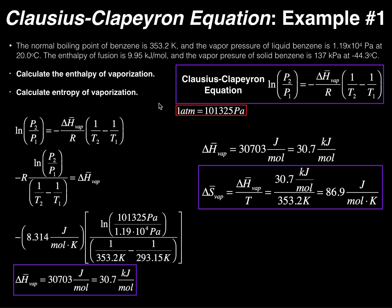Typical problems using the Clausius-Clapeyron equation involve determining the enthalpy of vaporization and/or the entropy of vaporization. The entropy calculation requires the enthalpy first. The major challenge in these problems is setting them up correctly — knowing whether each variable corresponds to the initial or final state. The actual calculation is not difficult once the setup is right. Please like and subscribe for more phase diagram videos in this playlist.